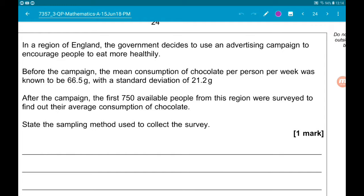So this whole thing was about people in a particular region. After the campaign, the government asked people about their consumption of chocolate from that particular region, so this is opportunity sampling.